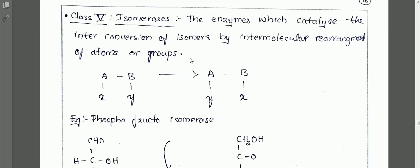Inter-conversion of isomers takes place by intramolecular rearrangement of atoms or groups.